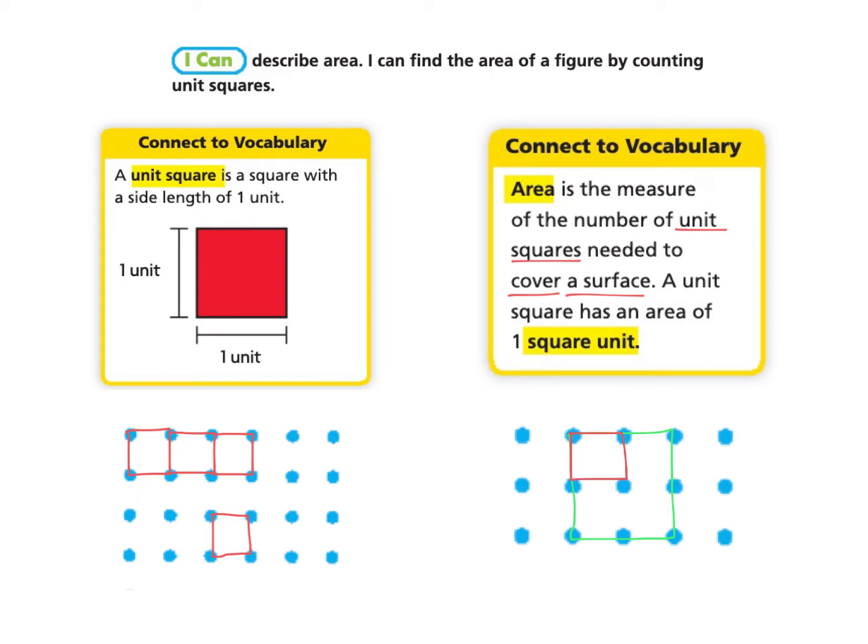For example, if I gave you the shape of this green square and asked what is the area, meaning how many unit squares are needed to cover that surface, you could make all of these unit squares inside the green shape. You would find that there are one, two, three, four unit squares inside. So the area would be four unit squares for the green square.